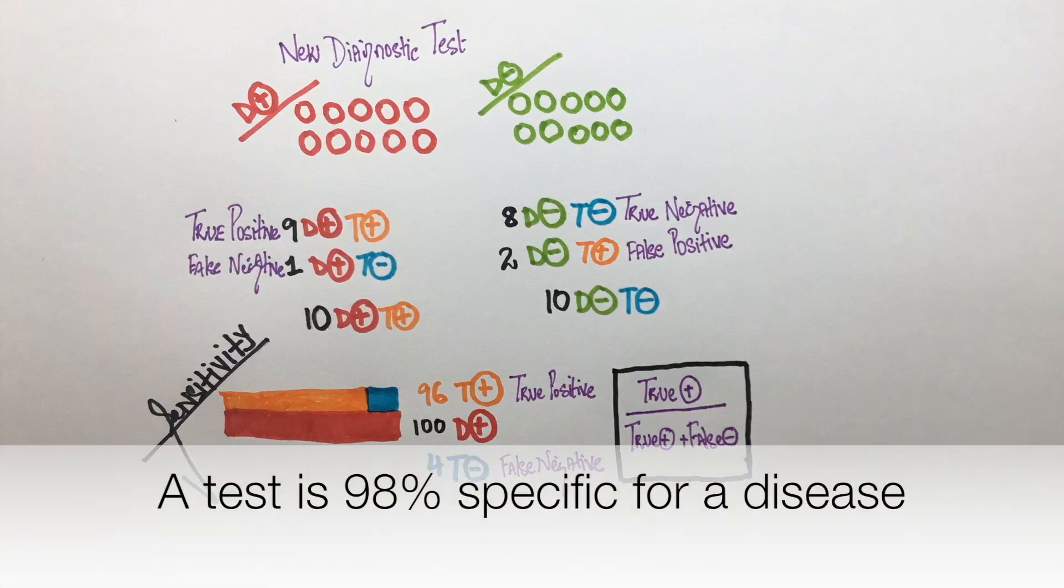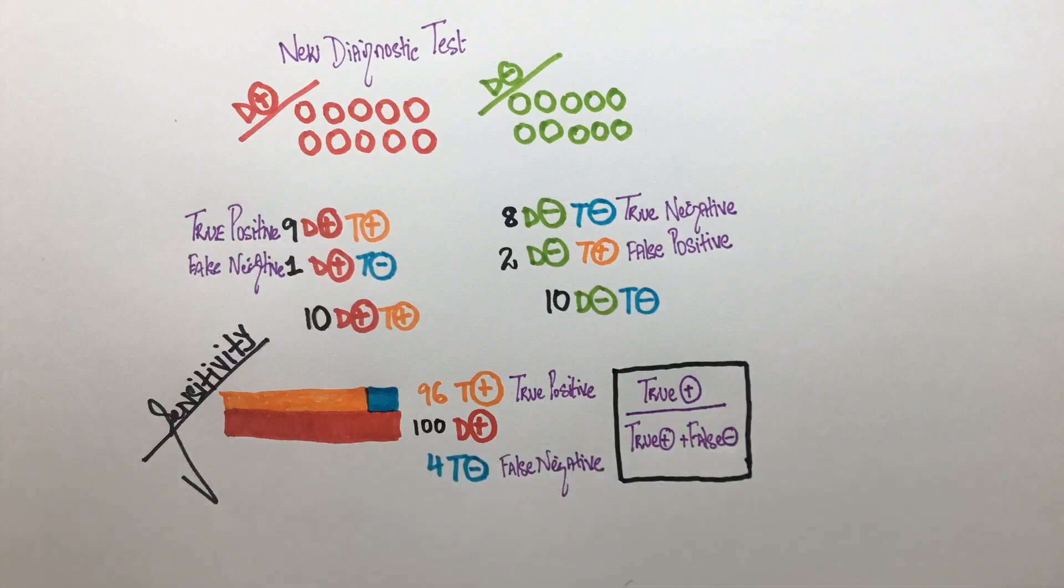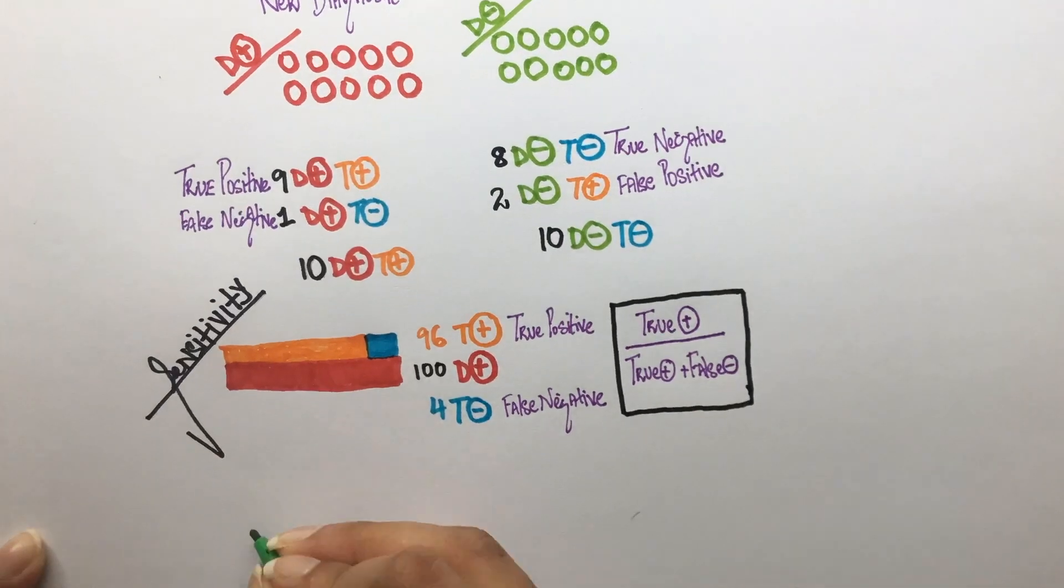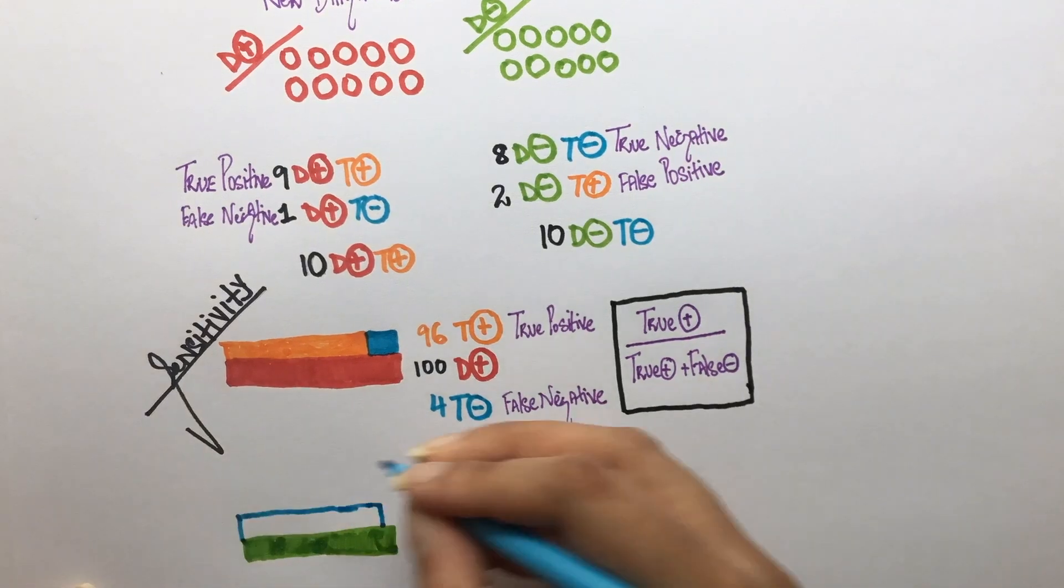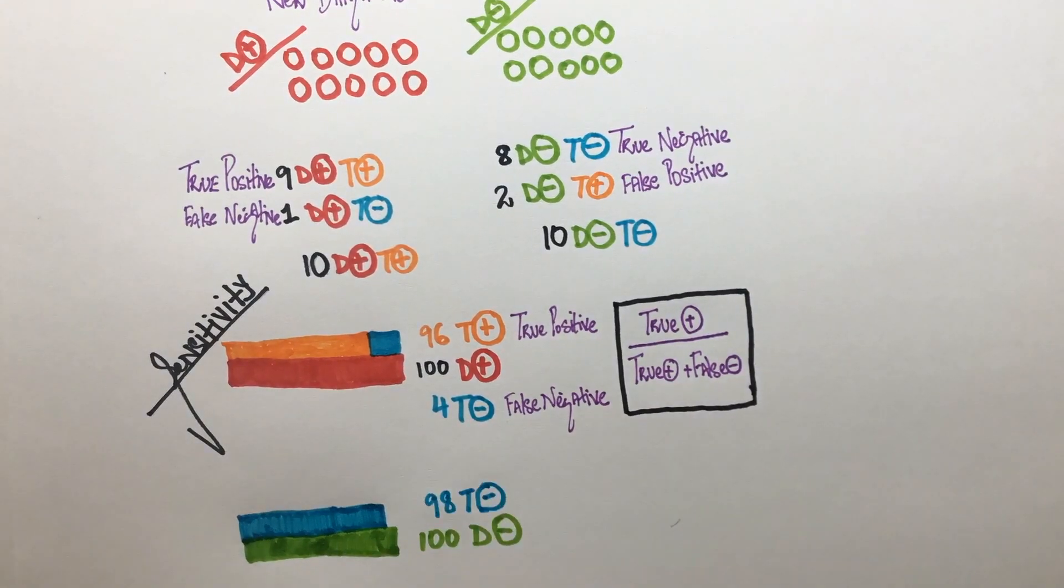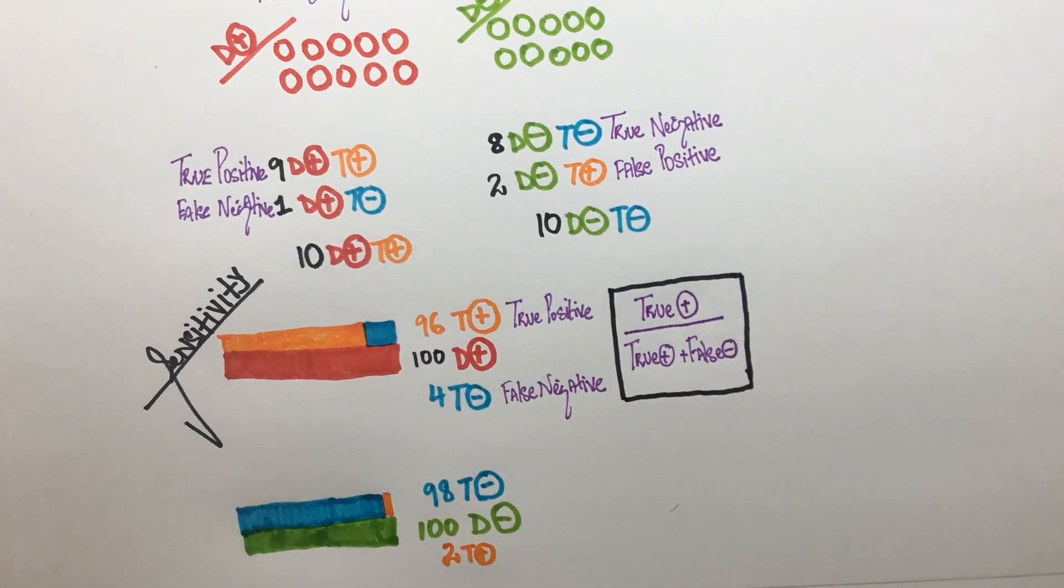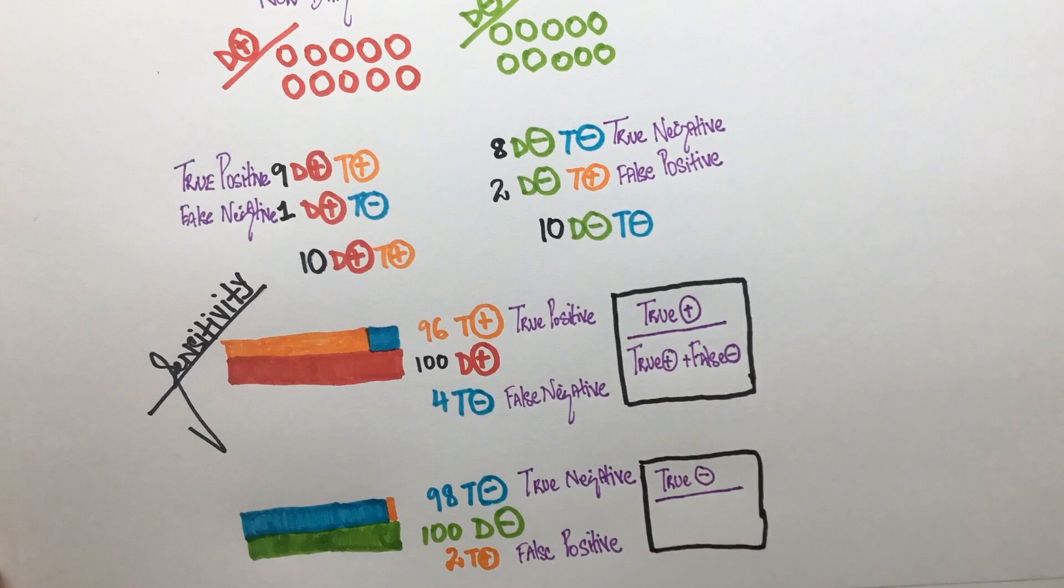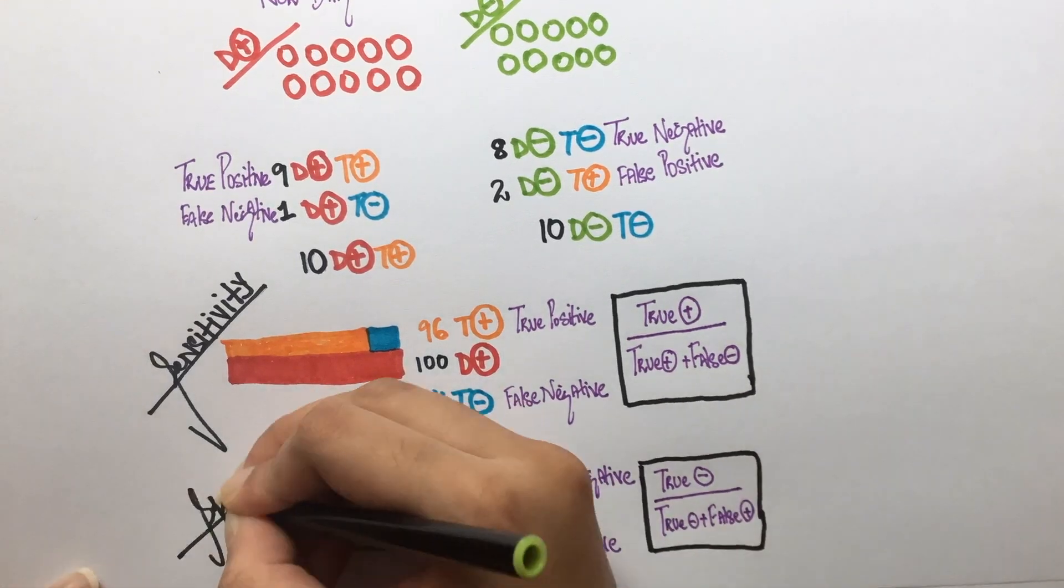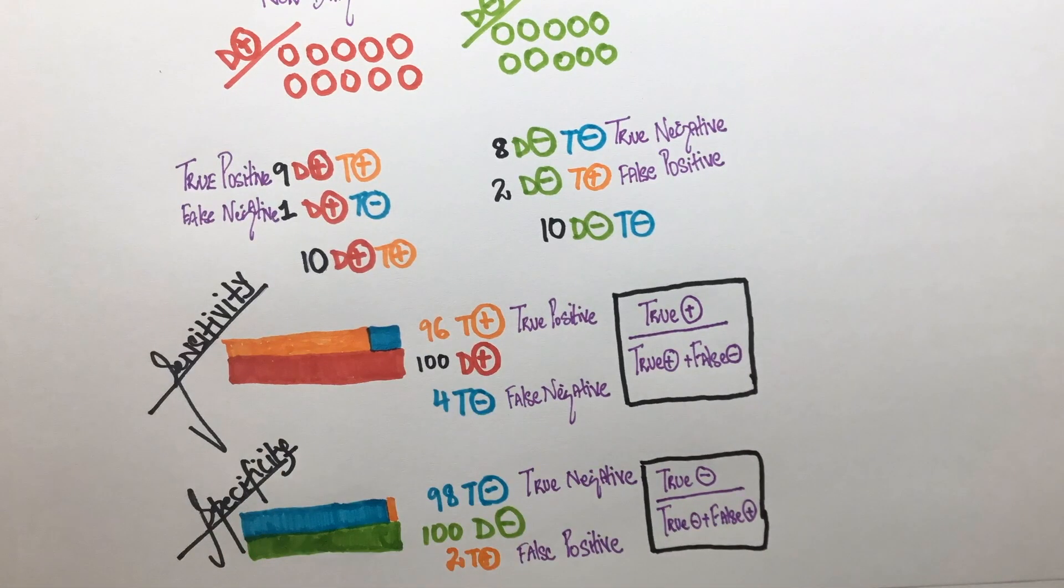When we say that a test is 98% specific for a particular disease, we mean that if 100 people who do not have that disease are tested, 98 of them will be tested negative. The remaining two who are tested positive although they are healthy will be false positives. So, the numerator here will be true negative and the denominator will be a sum of true negative and false positive.